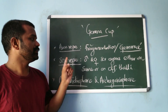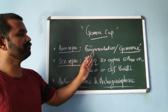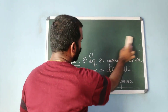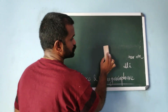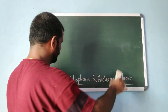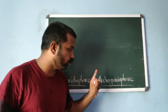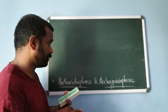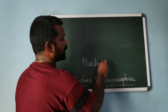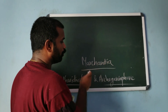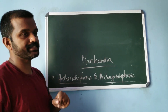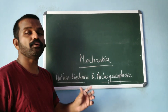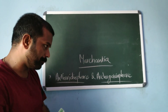Regarding sexual reproduction, male and female sex organs are produced either on the same thallus or on different thalli. In Marchantia, antheridiophore is the stalk bearing antheridia, and archegoniophore is the stalk bearing archegonium. Both are present in Marchantia, as labeled in NCERT.